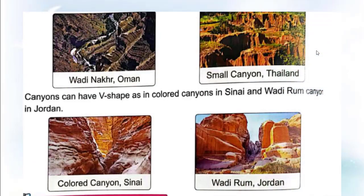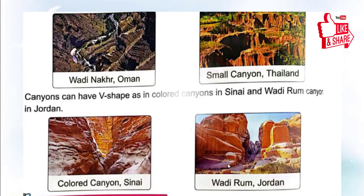Canyons can have a V-shape, as in the colored canyon in Oman and Wadi Rum canyon in Jordan. Like in this picture, Wadi Nakhr in Oman and a small canyon in Thailand both show this V-shape, as seen in Oman and Wadi Rum in Jordan.